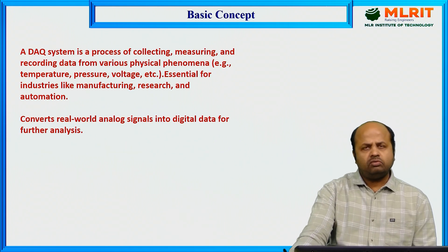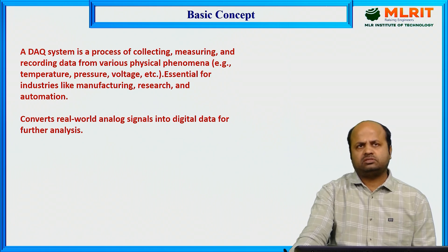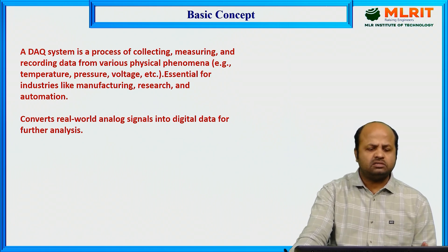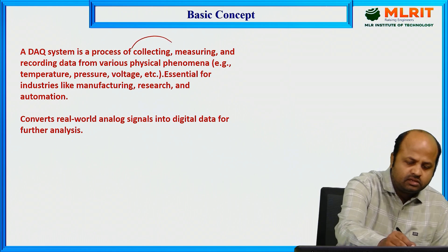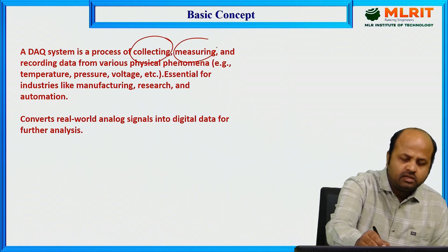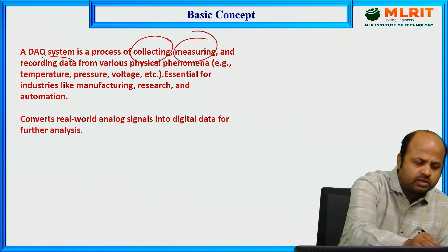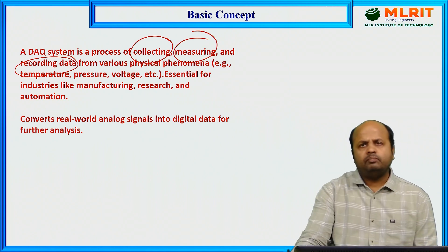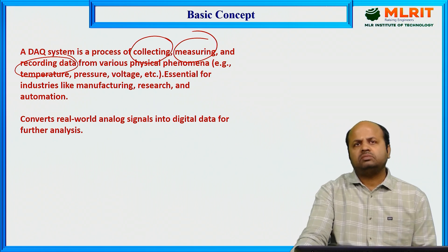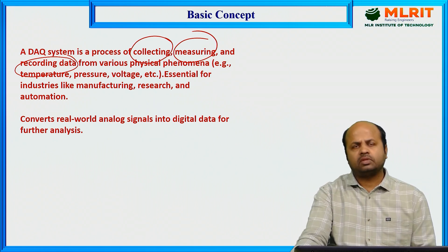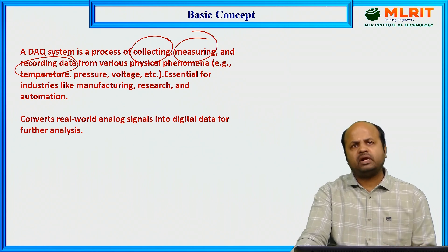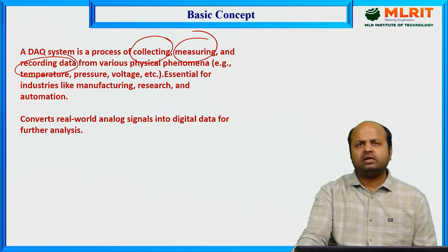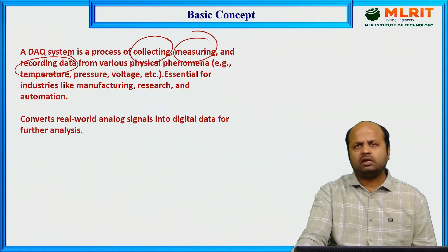So basically, what is a data acquisition system? A data acquisition system is a process of collecting, measuring, and recording data. It consists of three steps: collection of data, measuring of data, and recording of data. Collecting — how we can collect the data? By means of some sensors.